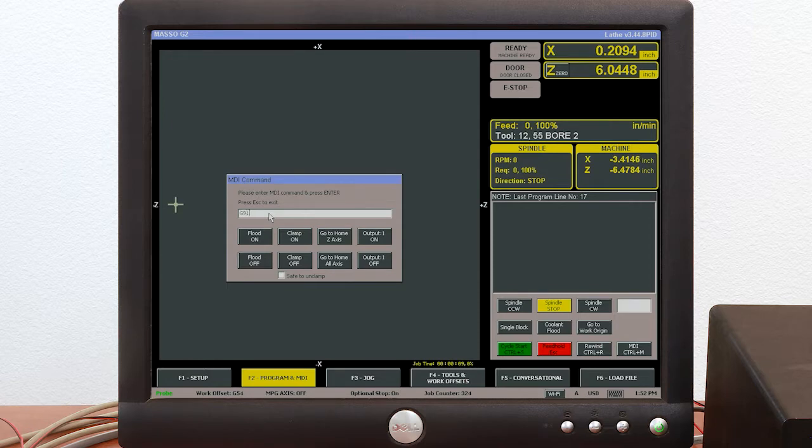So I'm going to go G91 which is an incremental move. G01 which is a linear move with a feed not a rapid move. Z point zero zero four for the distance I want the Z axis to move and F2.0 which is a feed rate of two inches a minute not a rapid move.